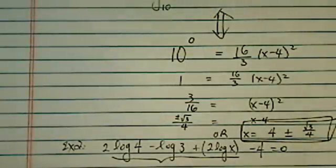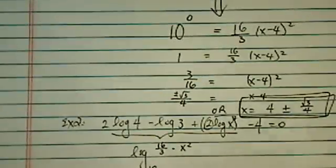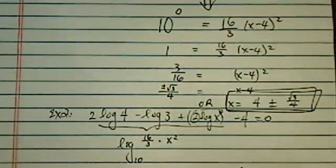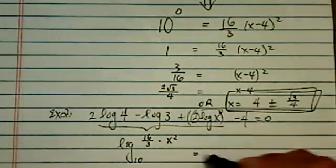I'm going to combine all this as we did it before. So I have log base of 10. I'm going to write 10 back in there. I have 16 divided by 3 times x squared. I'm putting this square back on there. And that is equal to 4.